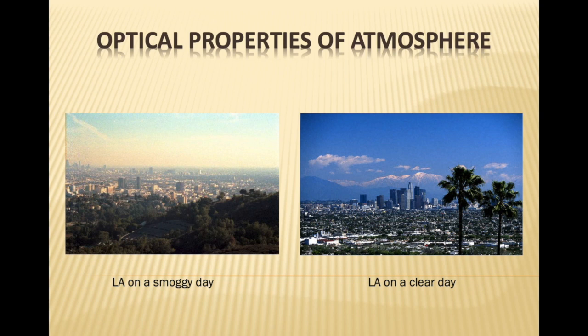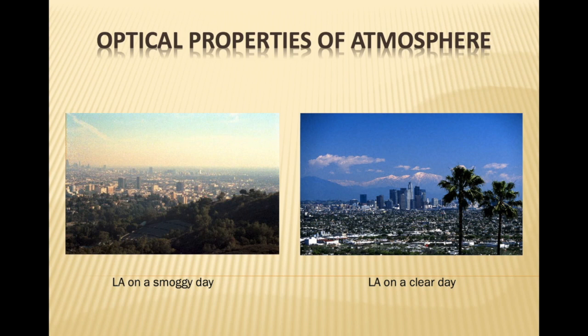Before going deeper into atmospheric optics, let me clarify the basics — what is light? When I was in seventh standard, my teachers told me light is a ray. It travels in a straight line, bounces off a surface, follows the important geometric law that angle of incidence equals angle of reflection. It follows a linear manner. Life was very simple then and I liked this concept.